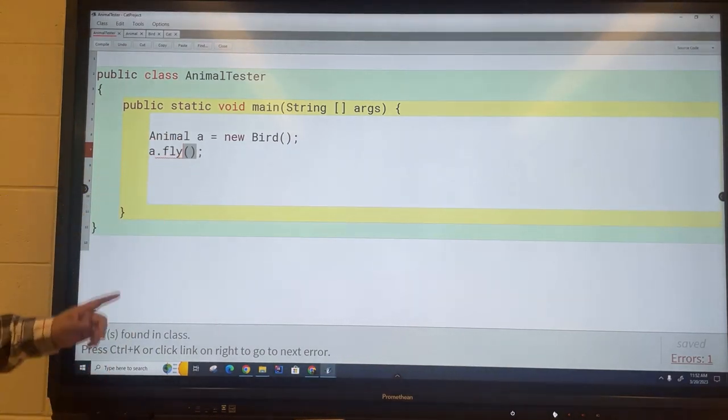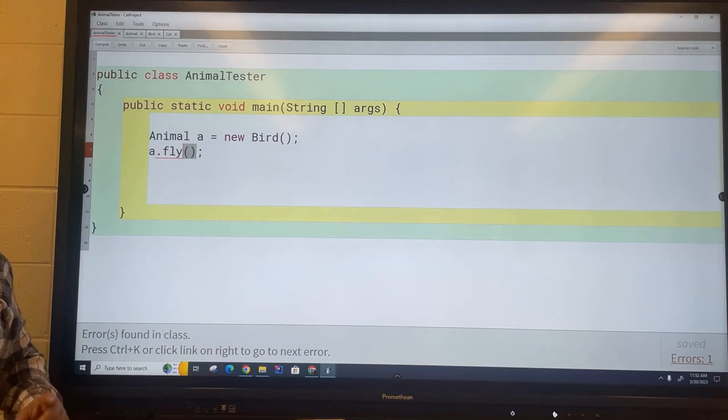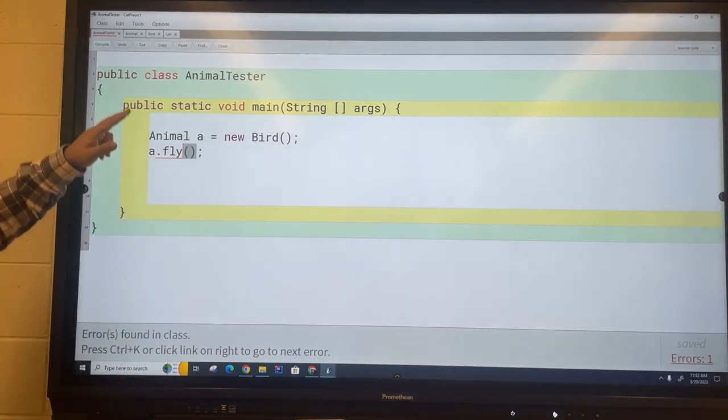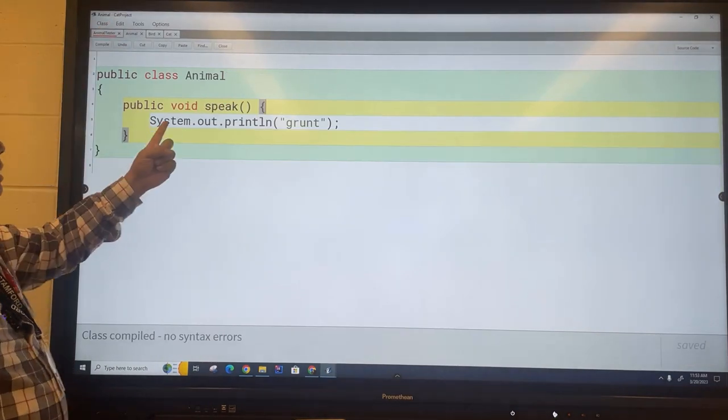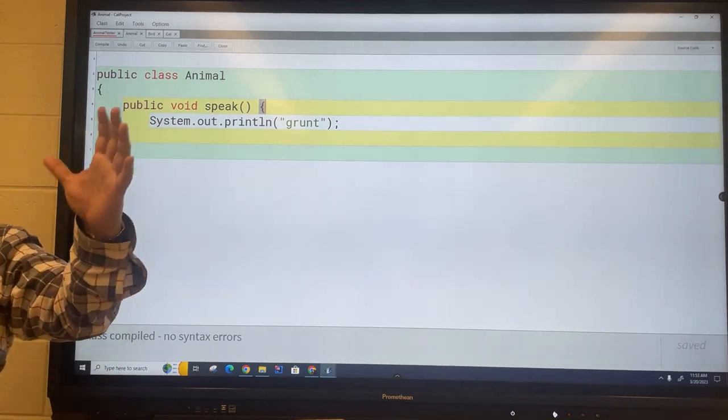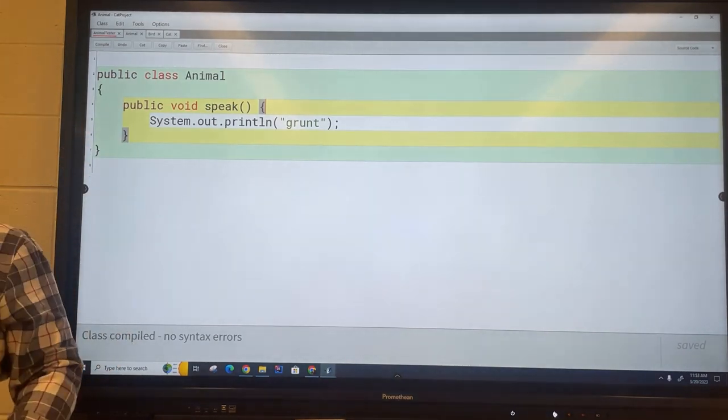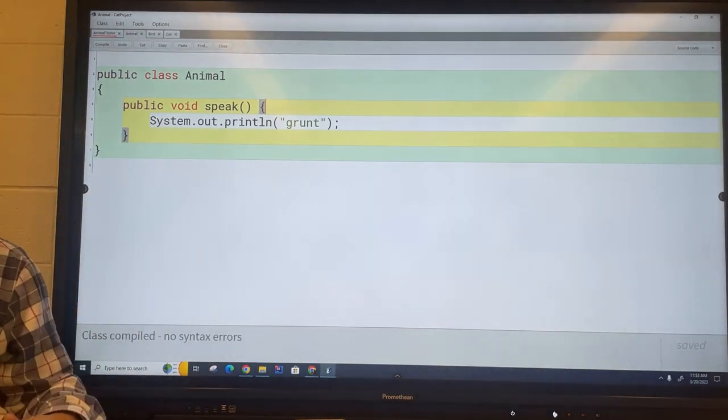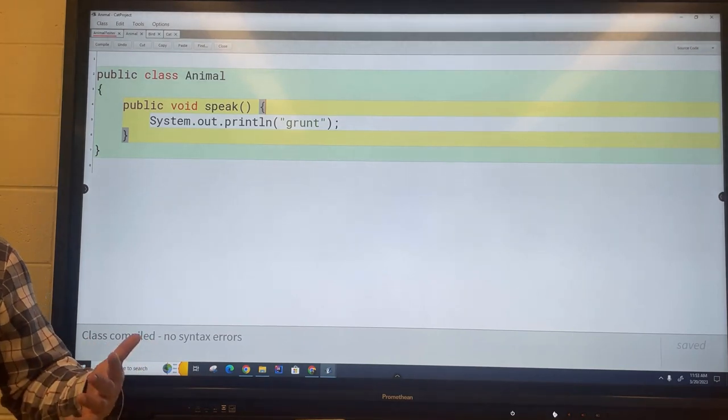When I told it to speak the thing that it checked at compile time before it started to compile is can an animal speak. That's the only question it asks, can an animal speak, and the answer is yes. We know that because here is the speak method for animal so the compiler gave it the thumbs up. It compiled and it started to run.